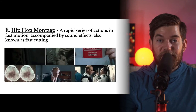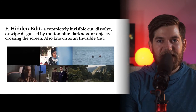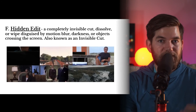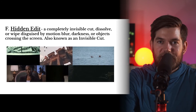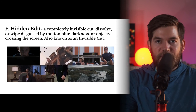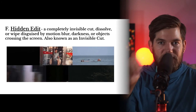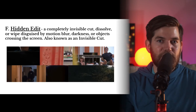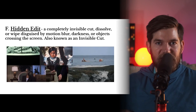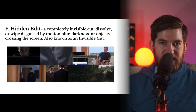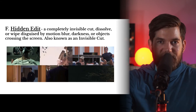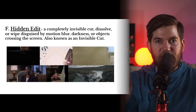Next, another favorite: the hidden edit. Earlier I mentioned invisible wipes, which are an example of hidden edits. You can also have invisible dissolves, invisible fades, and invisible cuts. A hidden edit is a completely invisible cut, dissolve, or wipe disguised by motion blur, darkness, or objects crossing in front of the camera — also known as an invisible cut. In the top left example, the camera moves down into darkness and then out of darkness into a completely different shot. In the top middle, a YouTuber uses fast-moving objects to create invisible wipes — the editor traces around objects, removing parts of the shot as the object moves across, essentially creating a line that wipes across just like a normal wipe, but undetectable.